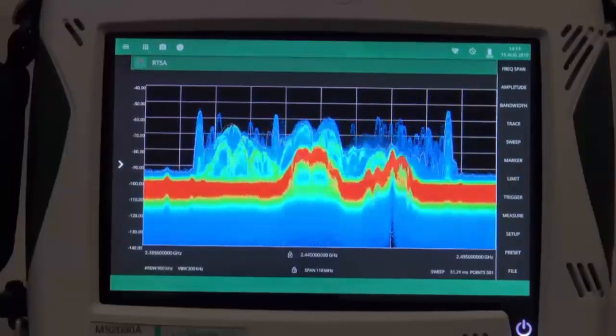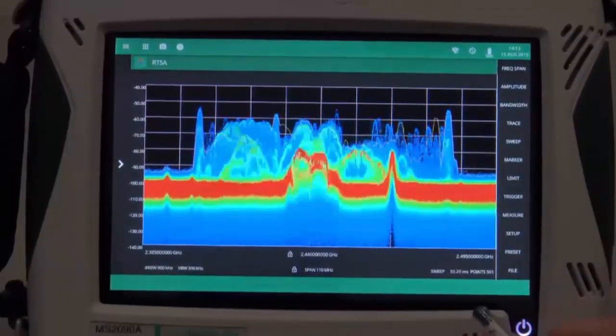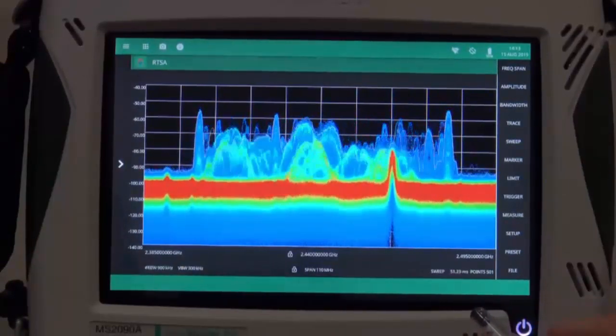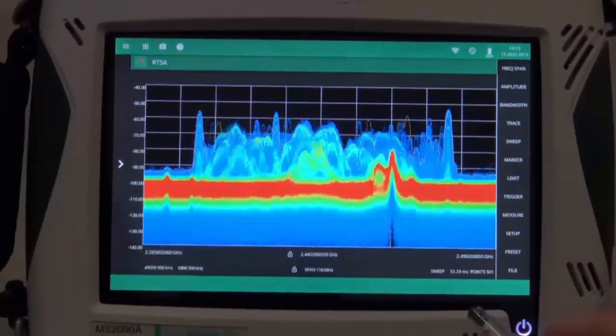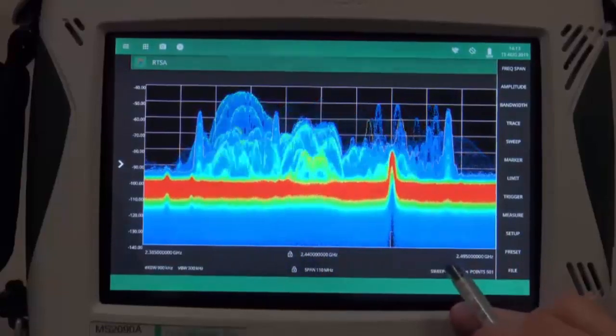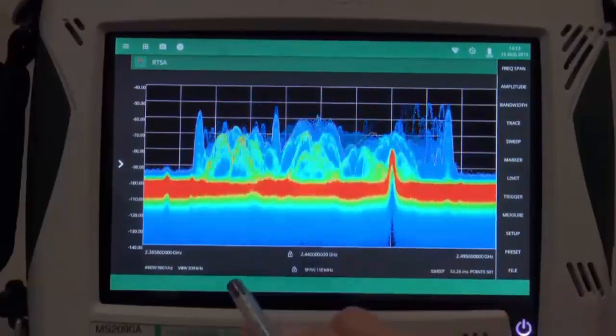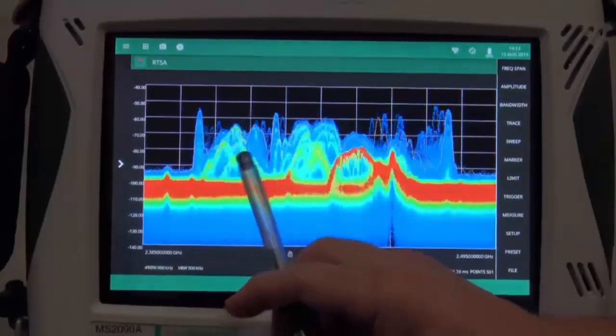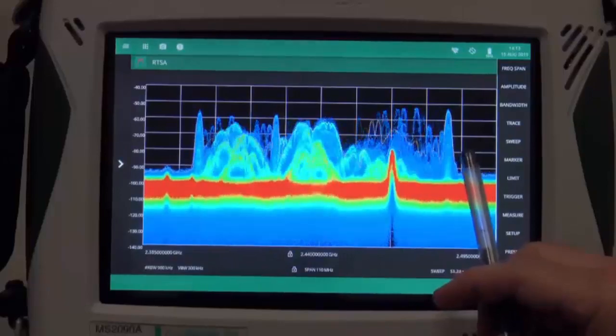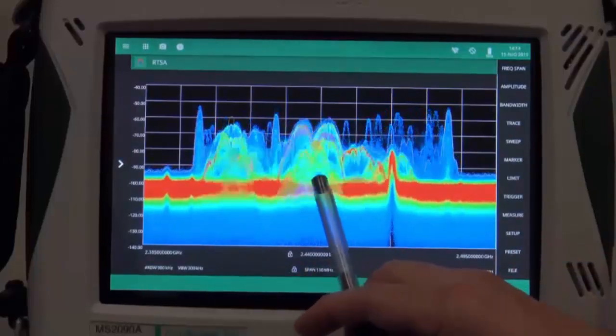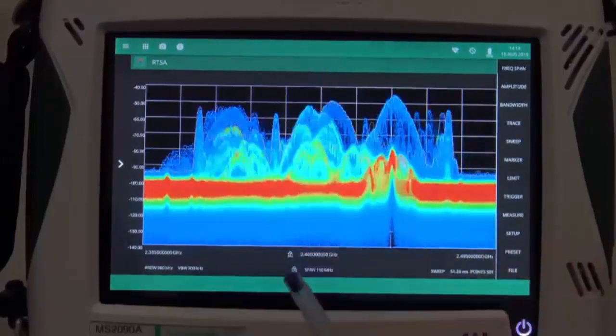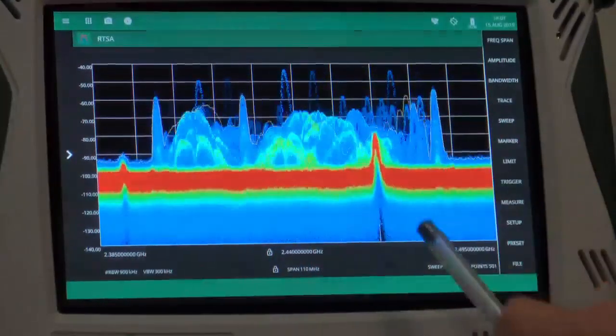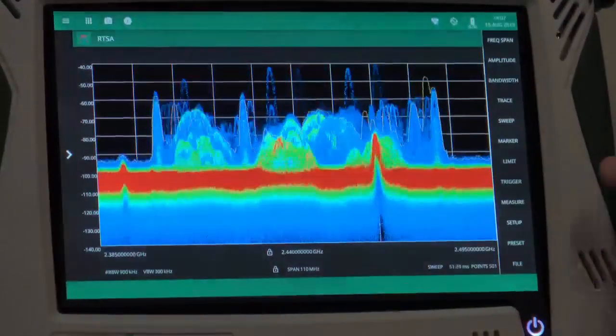you can see that the full 110 MHz bandwidth of the MS2090A shows us everything that's happening within this band over time. The data is summarized into this density display, where you see in real-time the advertising channels of your Bluetooth signals, as well as the data from the other 37 channels bouncing up and down. You also see several fixed Wi-Fi bands and Wi-Fi channels floating through the back. The data is clearly summarized in the display,